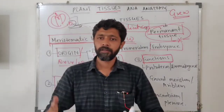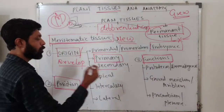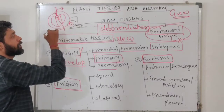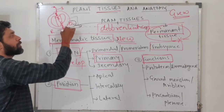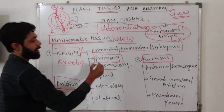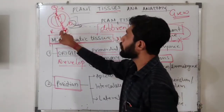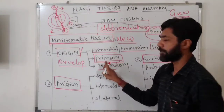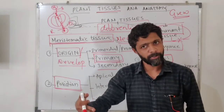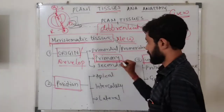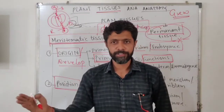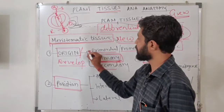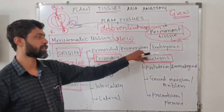When the seed is sown, the plumule and radicle emerge. The plumule develops into the shoot and the radicle into the root. At the tip of the shoot and root, meristeme is present — these are considered primary meristeme, present since the beginning of germination. Primary meristeme is produced from primordial or pro-meristeme.